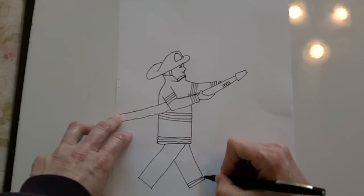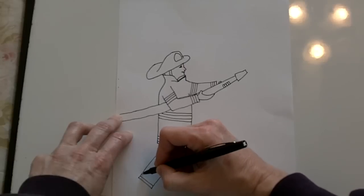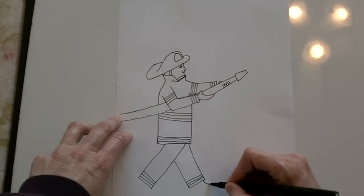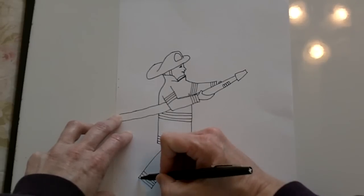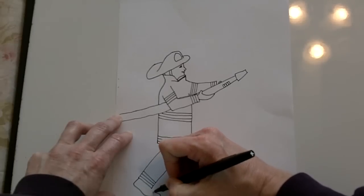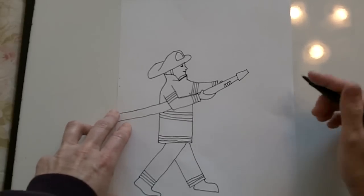There's stripes on the bottom, three stripes. And then his feet. This one is flat on the ground. This one has just got the toes on the ground like that.